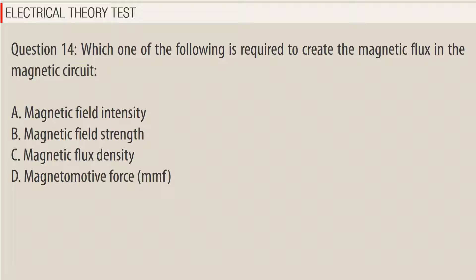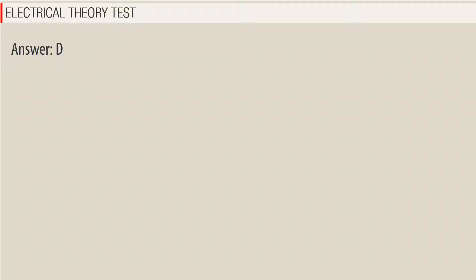Question 14. Which one of the following is required to create the magnetic flux in the magnetic circuit? a. Magnetic field intensity. b. Magnetic field strength. c. Magnetic flux density. d. Magnetomotive force (MMF). Answer: D.